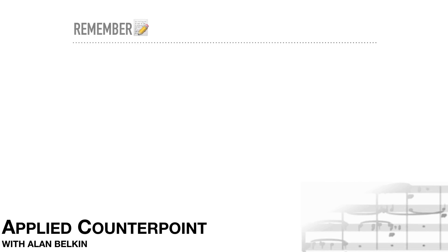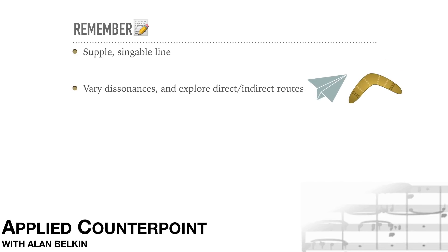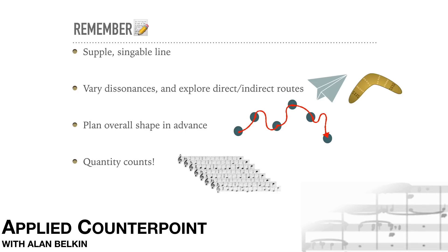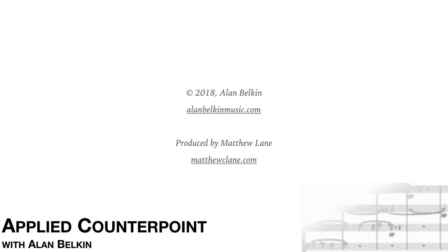Remember: aim for a supple singing line, vary the dissonances, and explore both direct and indirect routes between chord tones on the strong beats. Plan the overall melodic shape in advance. Becoming at ease with counterpoint requires doing a lot of it — quantity counts. And finally, sing and play.